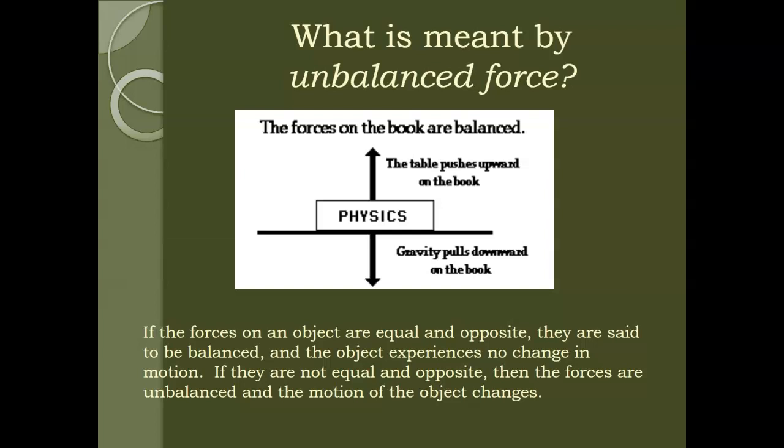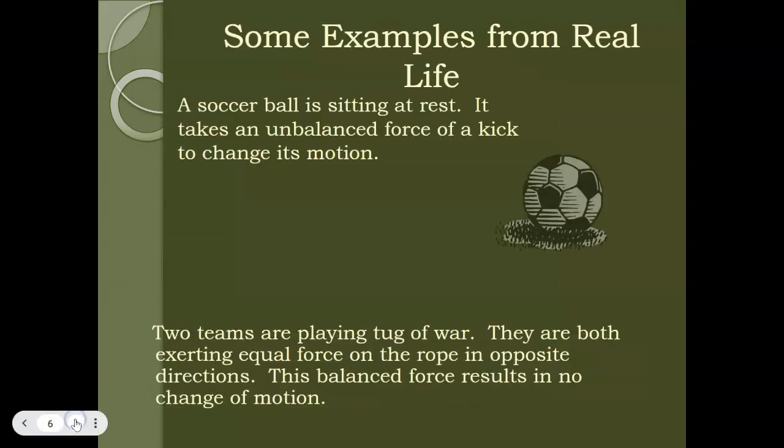However, if they're not equal and opposite, then the forces are unbalanced and the motion of the object changes. So for example, with this textbook just sitting here, the force of the table and the force of gravity are balanced, so the textbook is at rest. However, if I were to come up and place my hand on the textbook and slide it to the left, there would be an unbalanced force that helps the textbook be in motion. And after I stop applying that force, if I stopped pushing the textbook, then those forces would again be balanced and the textbook would come to a stop. So some real life examples, I already talked about the soccer ball, but if it sits at rest, it takes an unbalanced force of a kick to change the motion. Two teams are playing tug of war. They're both exerting equal force on the rope in opposite directions, and this balanced force results in no change of motion. So in order to win a tug of war, one of the teams would have to have an unbalanced force to pull the other team over.